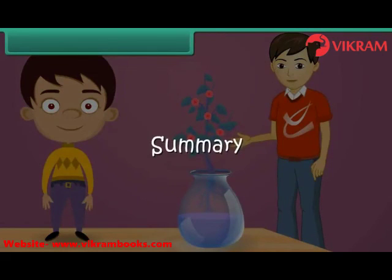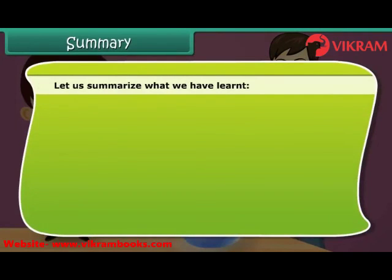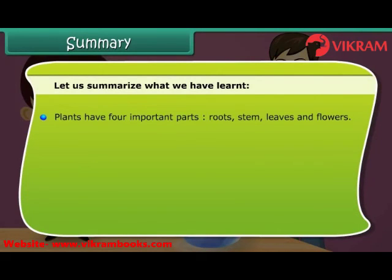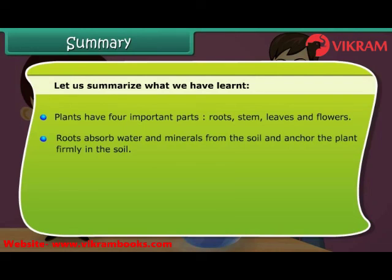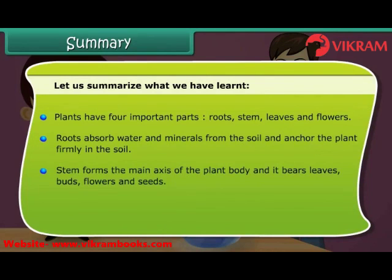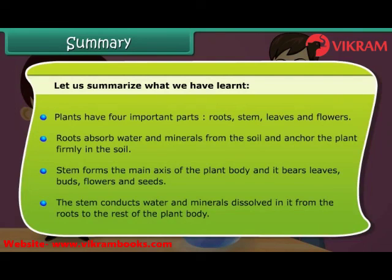Let us summarize what we have learnt. Plants have four important parts: roots, stem, leaves, and flowers. Roots absorb water and minerals from the soil and anchor the plant firmly in the soil. The stem forms the main axis of the plant body and bears leaves, buds, flowers, and seeds. The stem conducts water and minerals dissolved in it from the roots to the rest of the plant body.